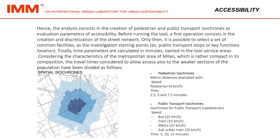Only then, it is possible to select a set of common facilities as the investigation starting points, for example, public transport stops or key functions locations. Finally, time parameters are calculated in minutes, named in the two service areas. Considering the characteristics of the metropolitan area of Milan, which is rather compact in its composition, the travel times considered to allow access also to the weaker sections of the population have been divided as follows.